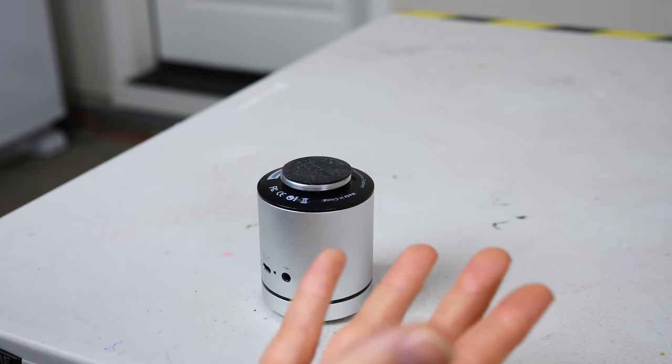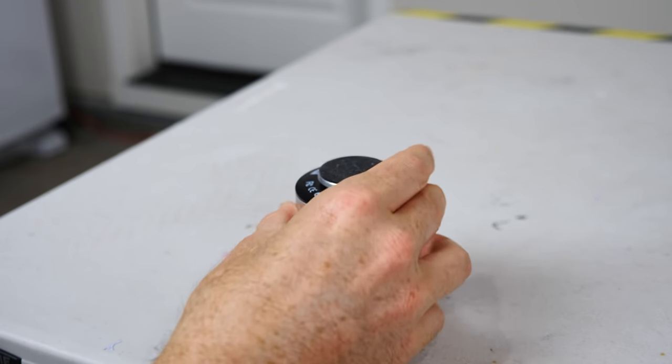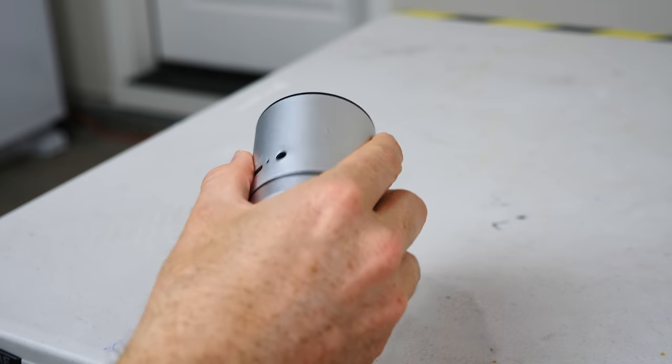So to move more air, we stick it on a surface. Instead of just vibrating this small circle here, it vibrates whatever it's touching, like this.